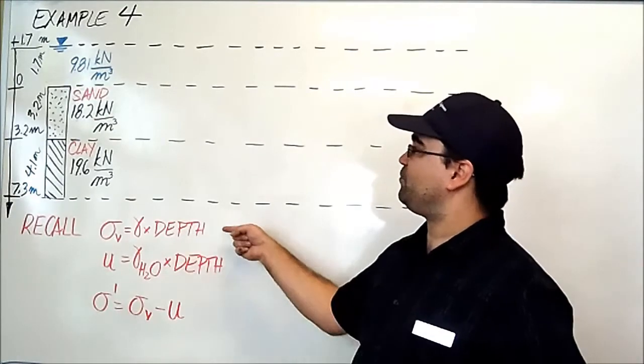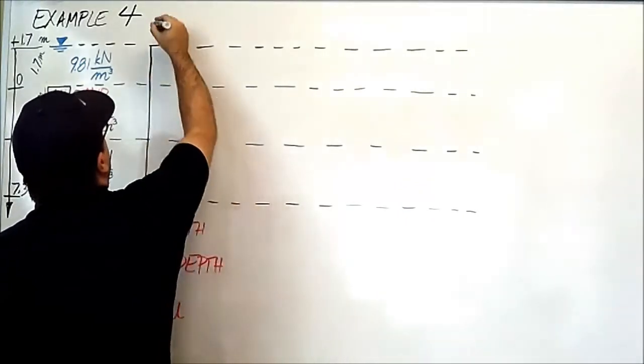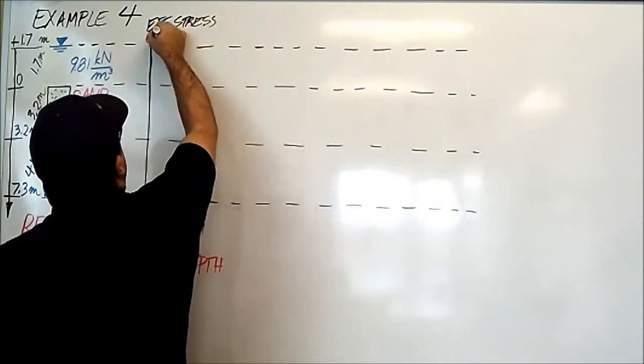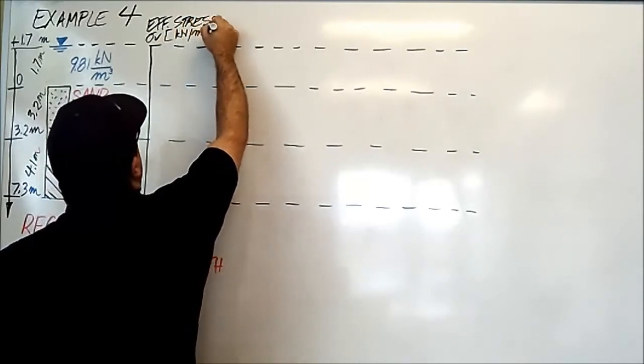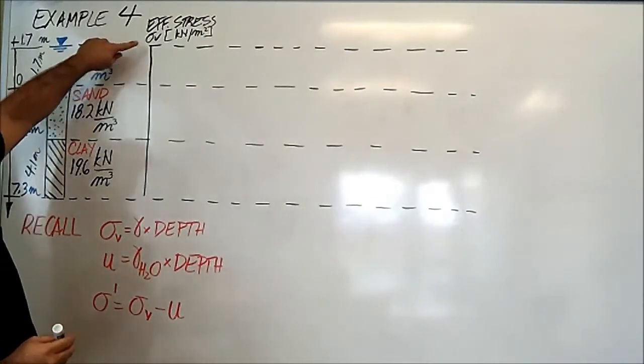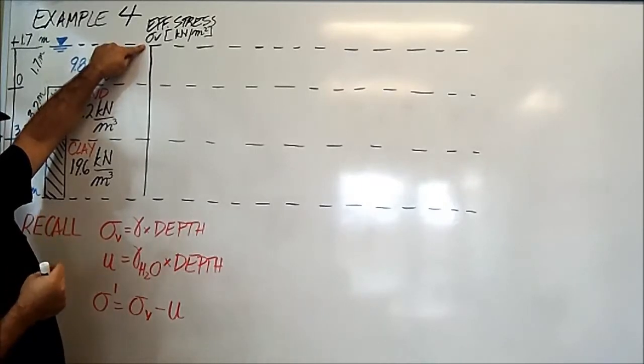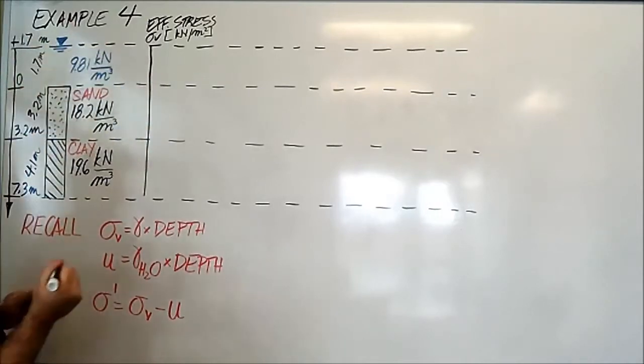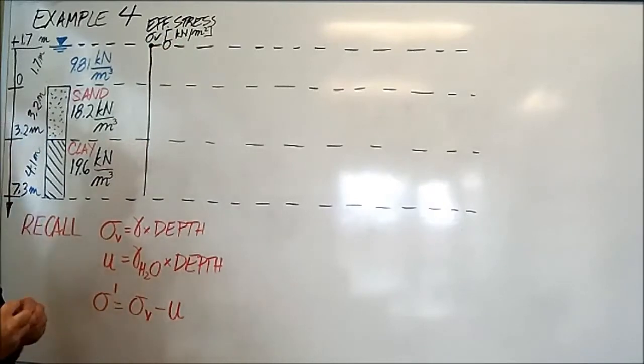We're going to start with the vertical stress. This is sigma v, and the units are in kilonewtons per square meter. Okay, so at the very top, as usual, 0. If you're not sure how I got 0, check out examples 1, 2, and 3. At the very top, always 0.